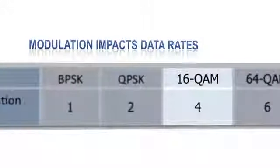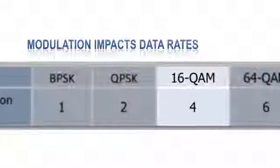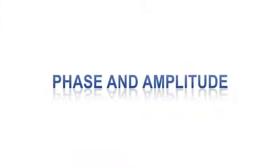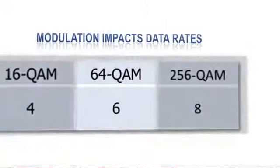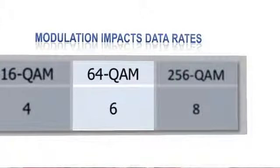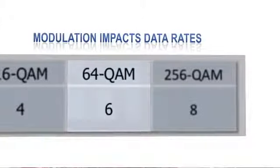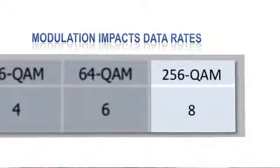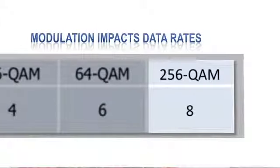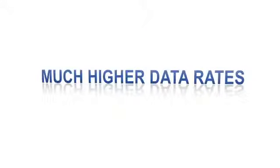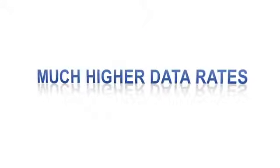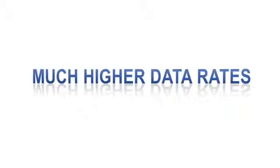I go to 16 QAM, which is now going to go to four bits per waveform. It varies the phase and the amplitude — that's what QAM means: quadrature amplitude modulation, changing the phase and the amplitude. I can go to 64 QAM, six bits per waveform. And with AC, you can keep going — you can go to 256 QAM, which allows me to send eight bits per waveform, getting up to much higher data rates than what I could with N, which only went up to 64 QAM.